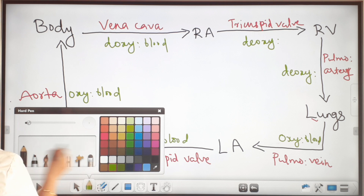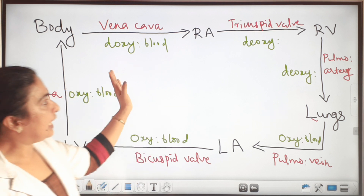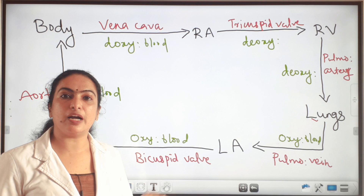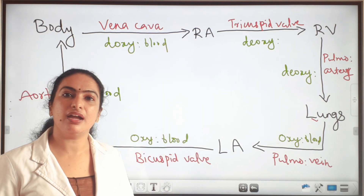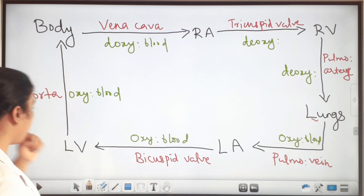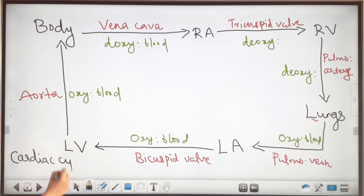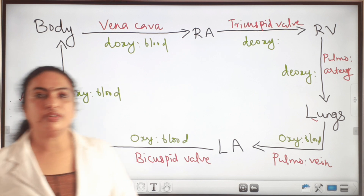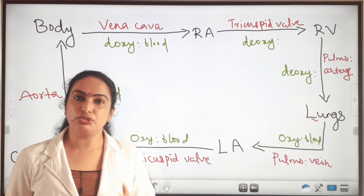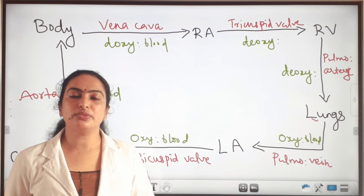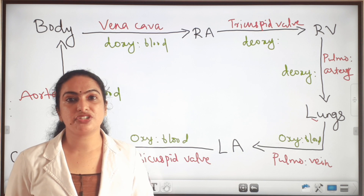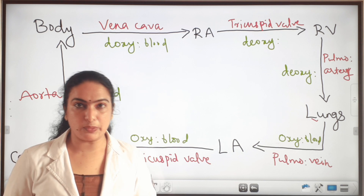Here the blood pumps twice in one complete cycle. This is the cyclic flow of blood in the human heart, and this cycle is known as the cardiac cycle. The cardiac cycle involves two types of circulation, so it is known as double circulation. The two types of circulation are systemic circulation and pulmonary circulation.